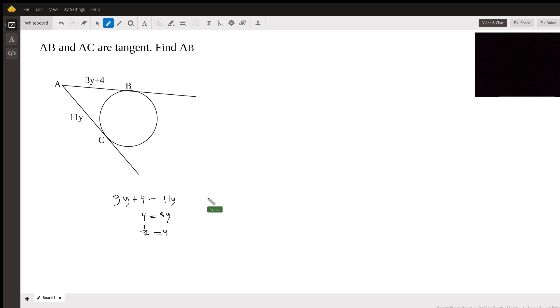The question is asking for AB. So AB equals 3Y plus 4, which is 3 times one-half plus 4. So AB equals 5 and a half. That's the answer.